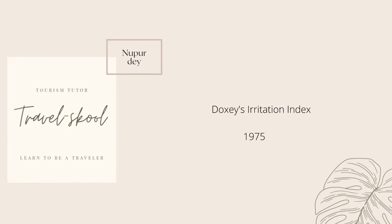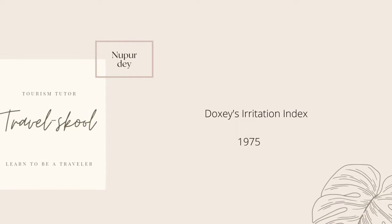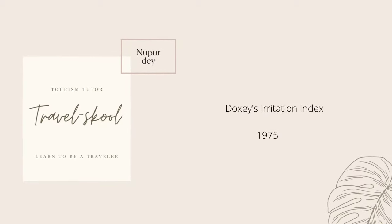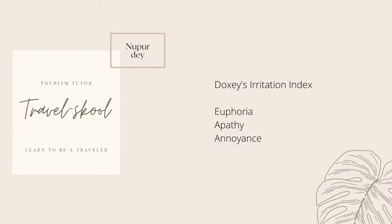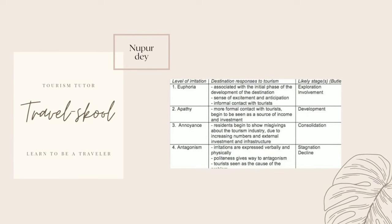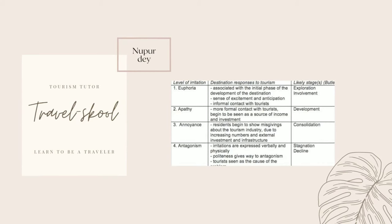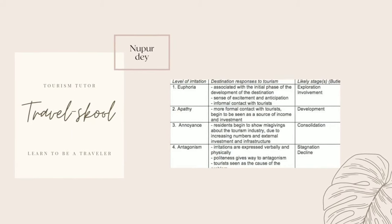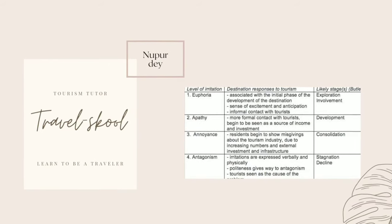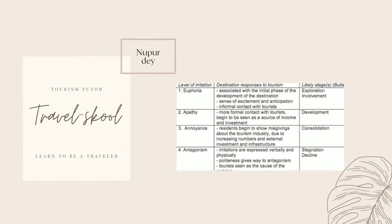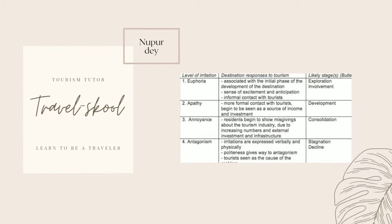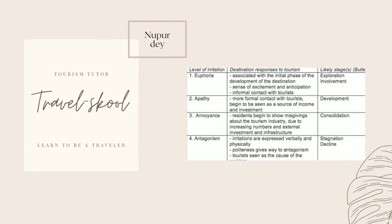The last model is Doxy's Irritation Index from 1975. It has various levels of irritation that communities may go through: euphoria, apathy, annoyance, and antagonism. The model suggests communities pass through a sequence of reactions as tourism develops. Initially, excitement and anticipation dominate as there is limited tourist contact. As locals see tourists as a source of income, communication becomes more formal (apathy). When stagnation is reached and no further development is possible, locals show misgivings and ultimately antagonism and irritation.